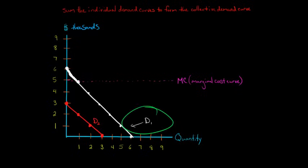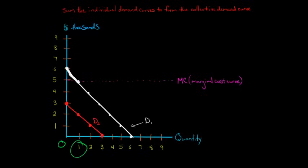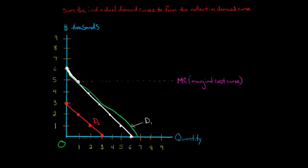So we have person 1, whose demand curve is the white line. At a quantity of 0, their marginal benefit from an additional streetlight would be 6. If we're at a quantity of 1, then person 1's marginal benefit of an additional streetlight would be 5. That's how I plotted out this line — I went through and asked what would be the marginal benefit at different quantities. When you get to 6 streetlights, person 1's marginal benefit of an additional streetlight is 0.